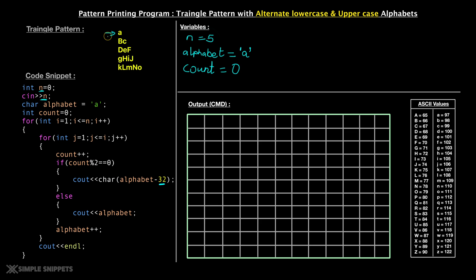We already know that the first for loop is generally for the number of rows. Currently n equals five, so we start int i equals one, i less than or equal to n, going from one to five. This outer loop will run five times, and in triangle printing the outer loop is for the number of rows. The inner loop is where the actual printing happens and the actual logic is written.